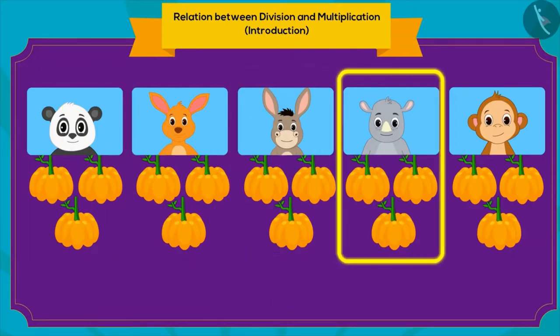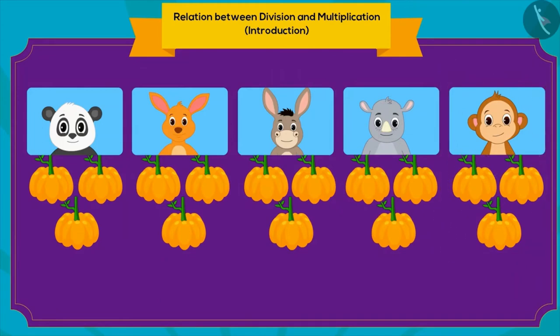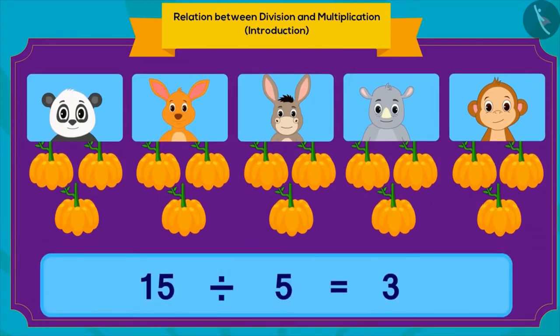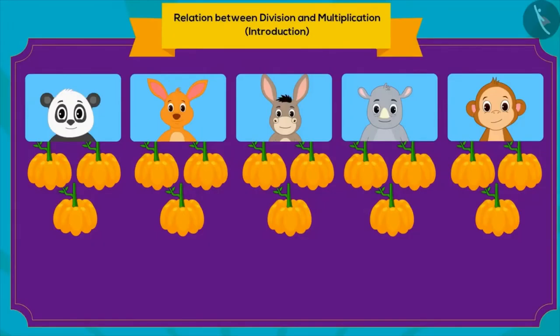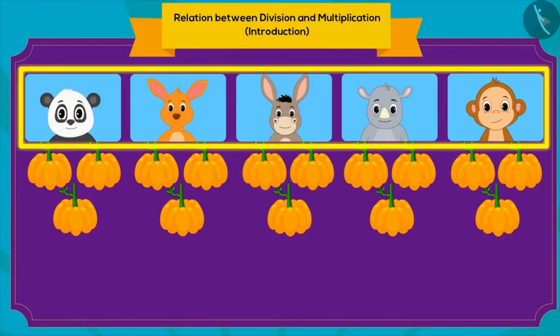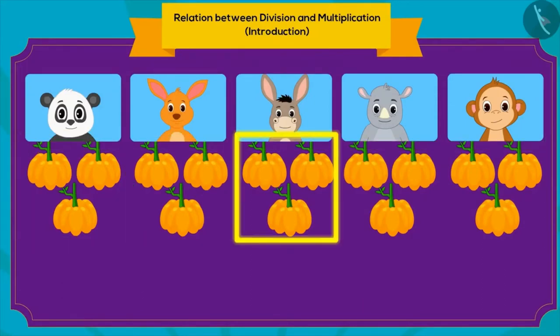How can we write this by using division? When you divide 15 pumpkins equally in five parts, you get three pumpkins in each part. If we look closely, we will see that we have five friends and each friend will get three pumpkins.